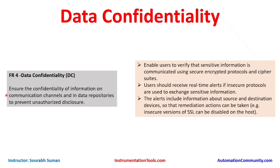The standard addresses confidentiality of information on communication channels and in data repositories — covering data in transit and data at rest. One measure is to enable users to verify that sensitive information is communicated using secure encrypted protocols and cipher suites. For example, if a third party accesses a terminal server in the DMZ, that communication must go through a secure channel such as a VPN tunnel with dual-factor authentication. Sensitive emails can also be encrypted using PKI when transmitted over untrusted networks like the internet.